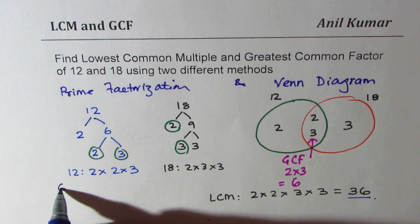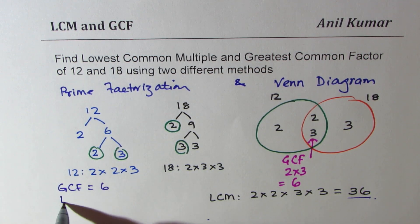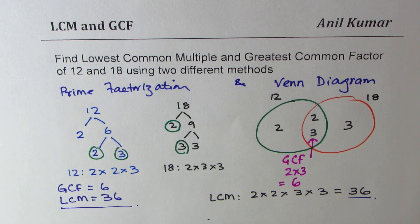We get the same answer: greatest common factor is equal to 6, and lowest common multiple is equal to 36. These two are very effective ways of finding lowest common multiple and greatest common factor.